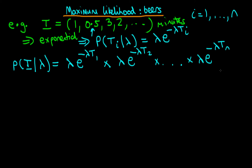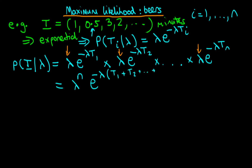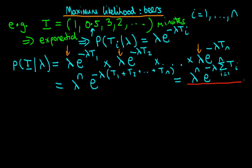We multiply the individual densities together because we assume independence of our observations. We notice each term has a lambda, giving us lambda to the power n. We also have e to the minus lambda times a time in each term, so combining these gives e to the minus lambda times the sum of t1 plus t2 up to tn — which we rewrite as lambda to the n times e to the minus lambda times the sum from i equals 1 to n of ti.